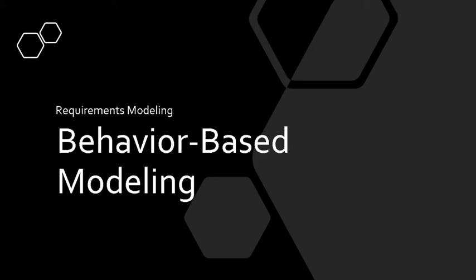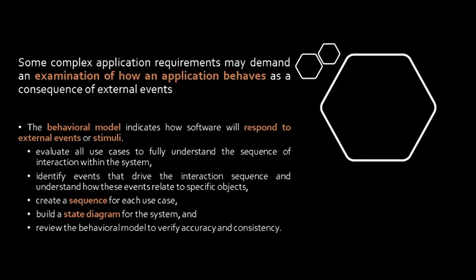We are now on our third modeling tool for requirements modeling. The behavioral model indicates how the software will respond to external events or stimuli. If we compare it to the use case diagram, the use case diagram is intended to model how the user interacts with the system. The state diagram, on the other hand, is intended to model how the system behaves and responds to a specific event. The modeling process for behavior-based modeling starts with reviewing or evaluating all the use cases.